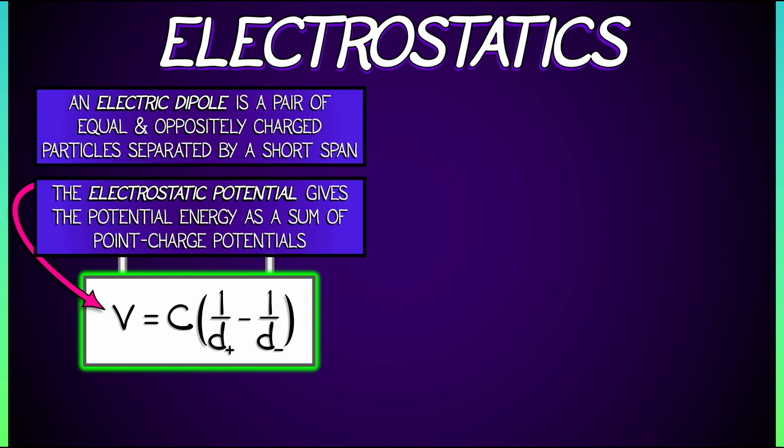What are these guys? Well, this C is a constant that depends on the Coulomb constant and on the charge of these two particles. The D plus, the D minus, these are distances to the individual charges in the dipole.